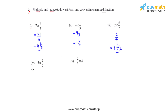Coming to the fourth bit, we have 5 times 2 over 9. The product of these two will be 10 over 9. When we divide 10 by 9 we get the quotient as 1 and the remainder also as 1. So the answer for the mixed fraction will be 1 and 1 ninth.